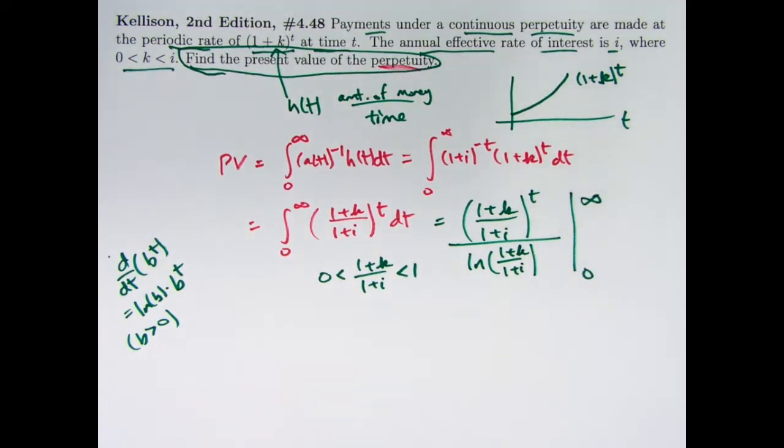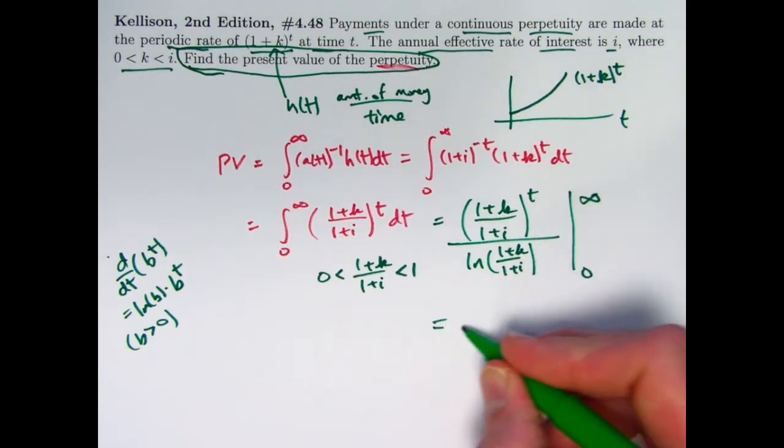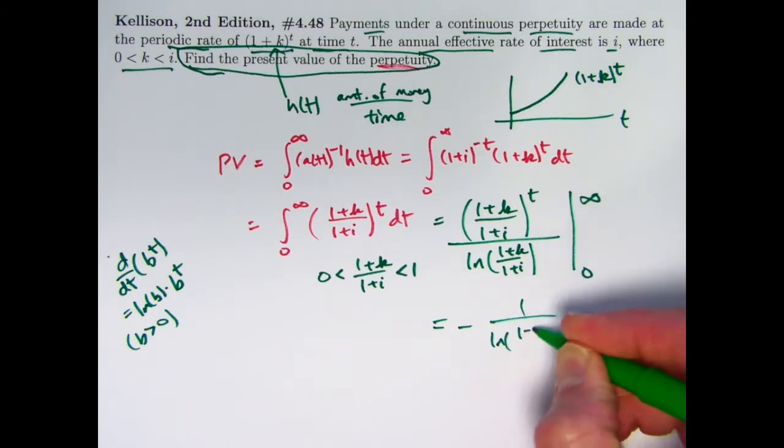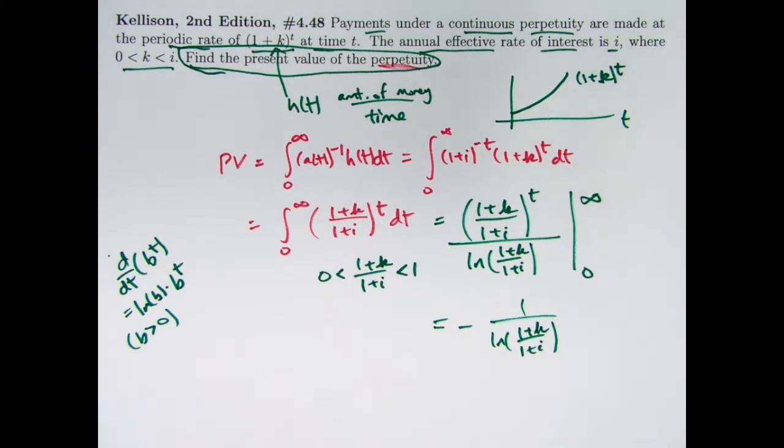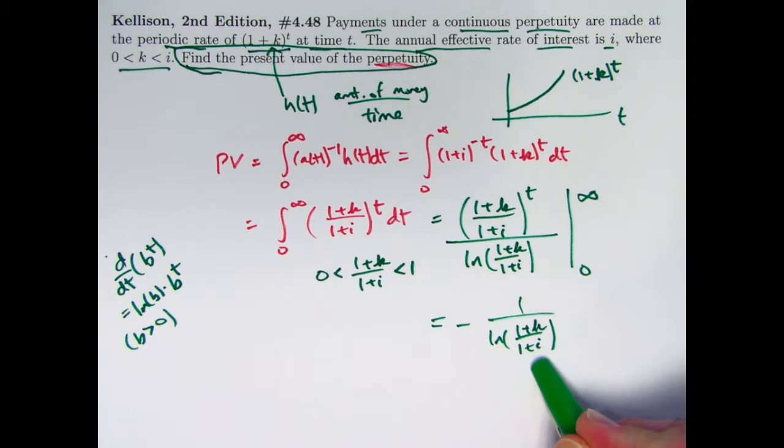When you evaluate it at infinity, in other words, when you take the limit of this as t goes to infinity, you get 0. And then you subtract what you get when you plug in t equals 0. This to the 0 power will be 1. And therefore, we get negative 1 over the natural log of 1 plus k over 1 plus i. We've got to subtract what we get when we plug in 0, the fundamental theorem of calculus. Is this a negative quantity? No, it's not negative. 1 plus k over 1 plus i is between 0 and 1, so the natural log of this is negative. Two negatives make a positive here. This is a positive quantity.